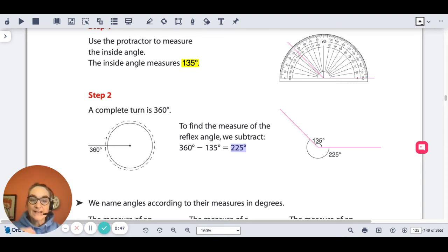The reflex angle is equal to 360 degrees minus its opposite angle, and in this case that works out to 225 degrees.